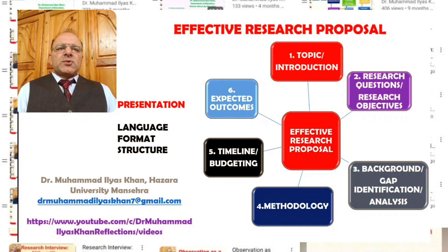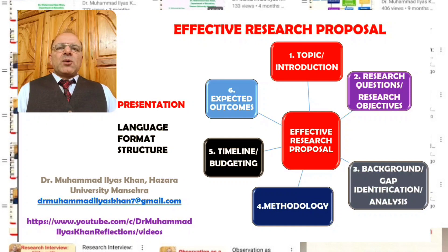Effective research proposals also have a timeline or timetable for the various stages of the proposed study. In many cases, budgeting and financing of the research is important, so a budgeting section is also needed in the research proposal. Lastly, effective research proposals should have a section highlighting the expected outcomes of the particular research — what we will get and what is the importance of what we might get at the end of the research process.